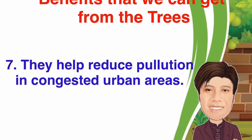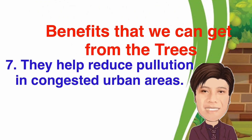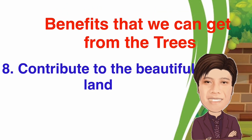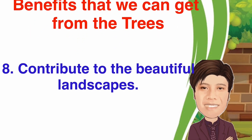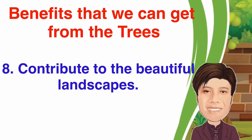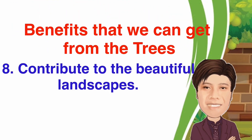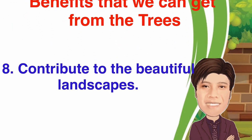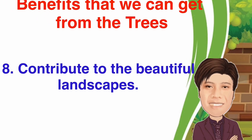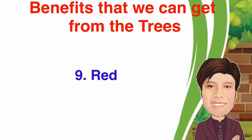A strong typhoon usually moves at a very fast speed. It continues to be that strong if there are no barriers on the path where it moves. But when it passes through barriers like mountains and trees, it slows down and the speed reduces. Small crops and plants as well as houses are safe when a typhoon is weak. 7. They help reduce pollution in congested urban areas.